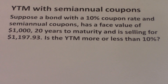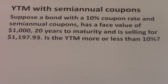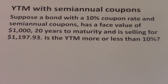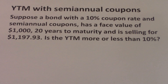Is the yield to maturity more or less than 10%? We answer this question by looking at the price of the bond. The price is currently $1,197.93, which is higher than the face value of $1,000 — meaning the bond is trading at a premium. Bonds trade at a premium when their coupon rate is higher than the yield to maturity. So the yield to maturity here is going to be less than 10%.